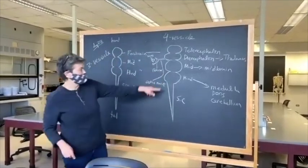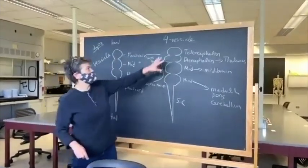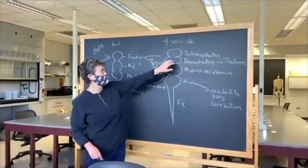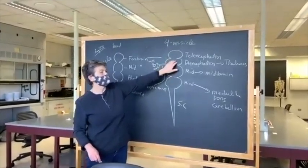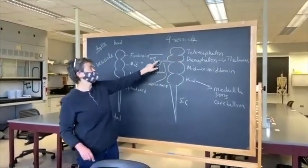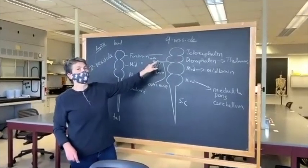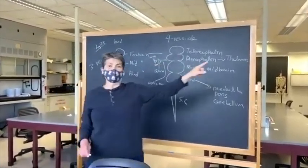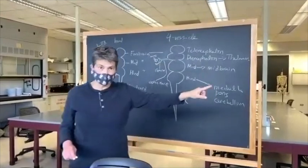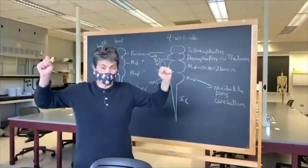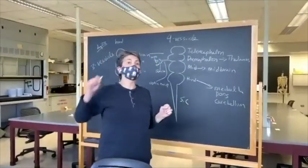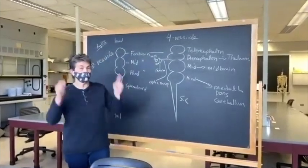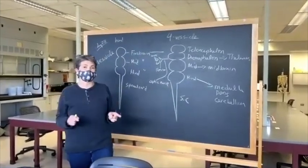What that means is the central nervous system — spinal cord, hindbrain, midbrain, diencephalon — is continuous with the retina and optic nerve. That means the retina and optic nerve are part of the central nervous system. That's a big deal. When you look through the pupil to somebody's retina, you are looking at the central nervous system.